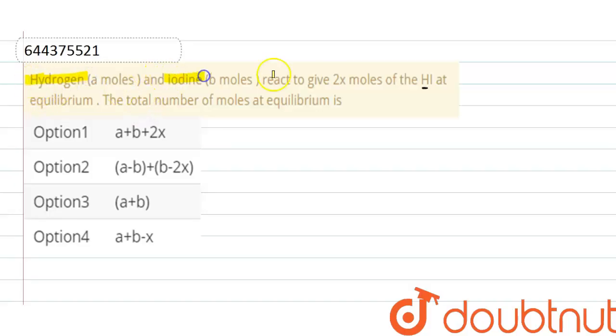Hydrogen and iodine react to give 2x moles of HI at equilibrium. The total number of moles at equilibrium is what we need to find. In this question, we have to find out total moles at equilibrium, and the reaction here is H2